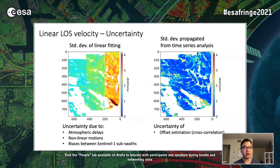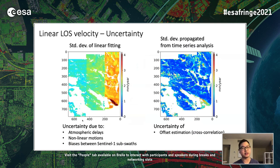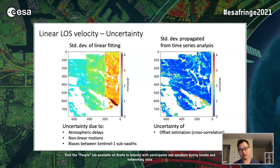We then assess the uncertainty. One uncertainty is from the linear fitting of the time series, which includes contributions from atmospheric delays, nonlinear deformations, and biases between Sentinel-1A subswaths. We can also propagate the standard deviation from the stack of offsets to the velocity field through linear propagation. These uncertainties due to offset estimation are much smaller than those from atmospheric and other sources.